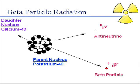Beta particles are high-energy, high-speed electrons or positrons emitted by certain types of radioactive nuclei. The production of beta particles is termed beta decay. There are two forms of beta decay: beta negative and beta positive. Beta particles can be used to treat health conditions such as eye and bone cancer.